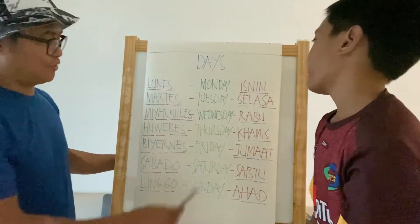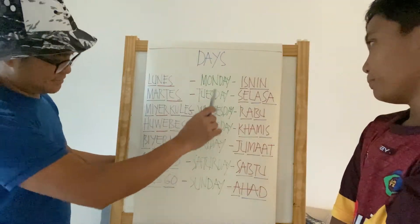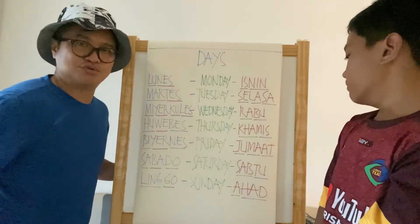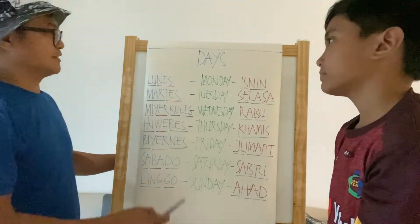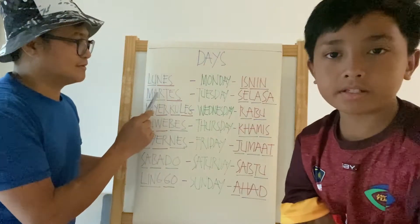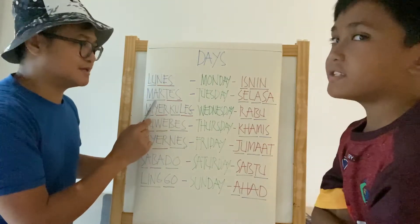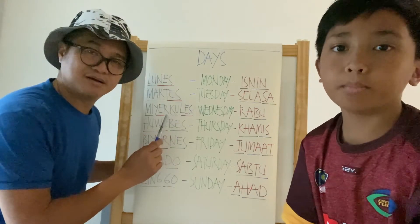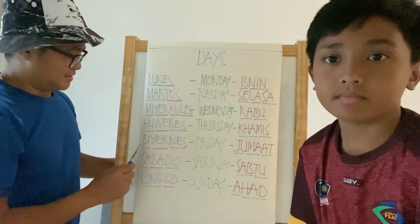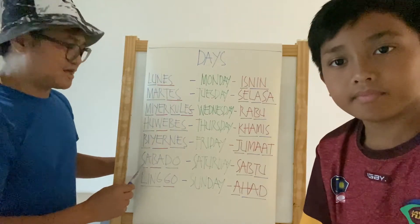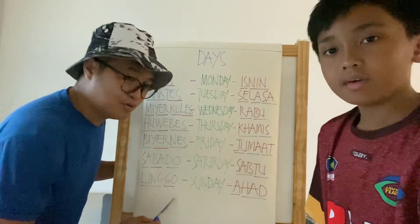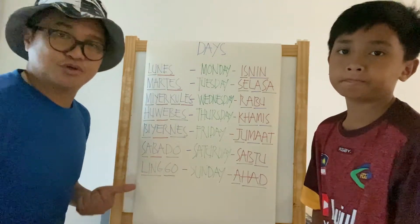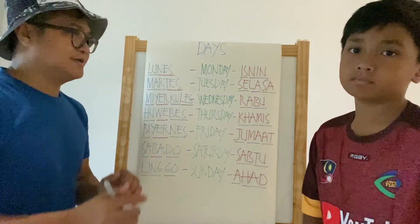Now we quickly go to the days — seven days, Monday until Sunday. I will go through the Filipino translation and Amgiburism Junior will do the Bahasa Malaysia. Monday is 'Lunes' — Isnin. Tuesday is 'Martes' — Selasa. Wednesday is 'Miyerkules' — Rabu. Thursday is 'Huwebes' — Khamis. Friday is 'Biyernes' — Jumaat. Saturday is 'Sabado' — Sabtu. Sunday is 'Linggo' — Ahad.